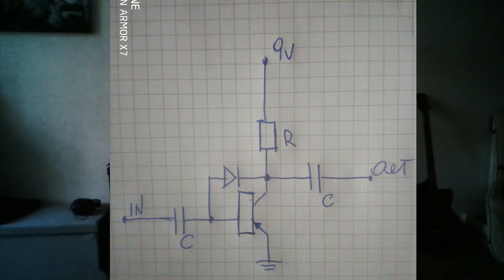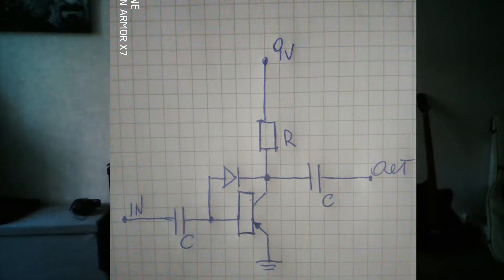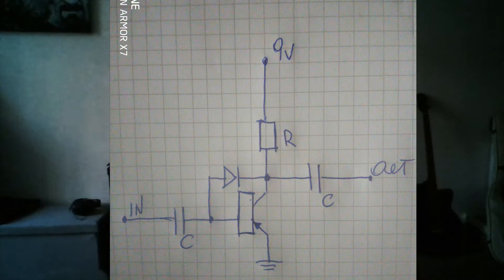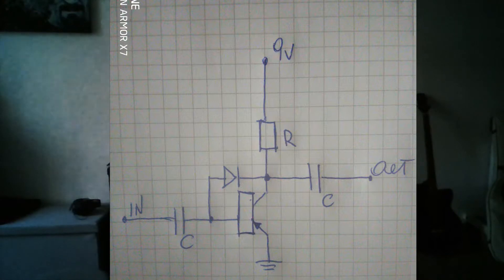This picture presents a very simple fuzz circuit which has only five components: two capacitors, one resistor, a diode, and a transistor. The 9-volt battery provides the power supply to the circuit. The power supply goes through the resistor, which adjusts the overall gain. The input signal goes to the first capacitor, which controls how much bass will pass through, then goes through the diode — which bypasses the transistor — and also through the transistor, which adjusts the gain and adds harmonics to the signal. The diode is responsible for making the signal clip.